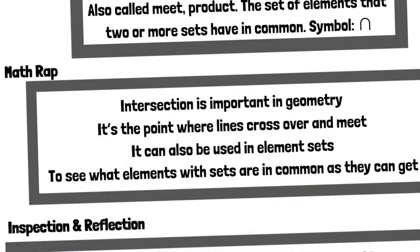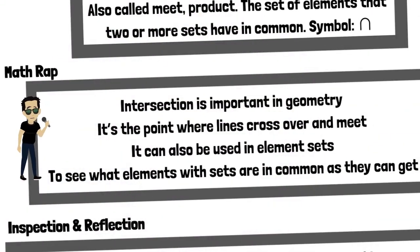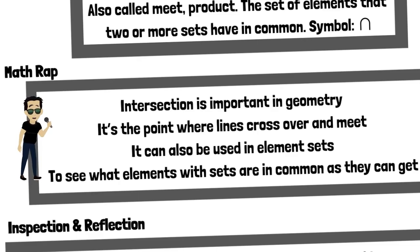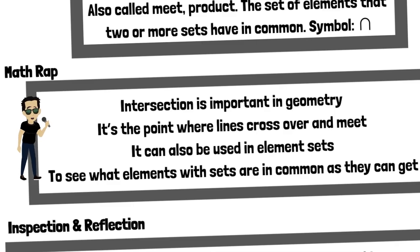Math Wrap. Intersection is important in geometry — it's the point where lines cross over and meet. It can also be used in element sets to see what elements within sets are in common.